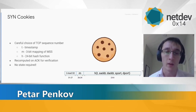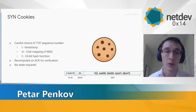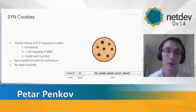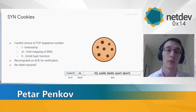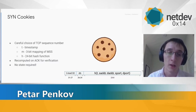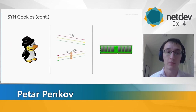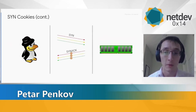When the third packet in the handshake is received, we recompute what the cookie should be, and as long as the timestamp is recent — typically within a minute or two — we can verify there was an initial SYN packet. This means we don't need to keep in-memory state, which largely solves this problem.